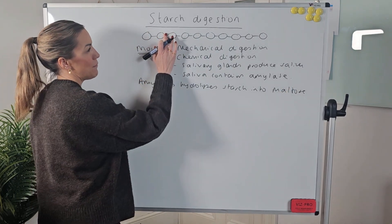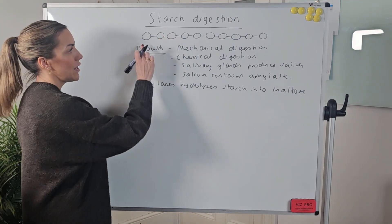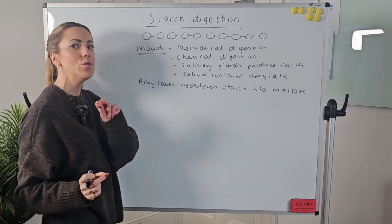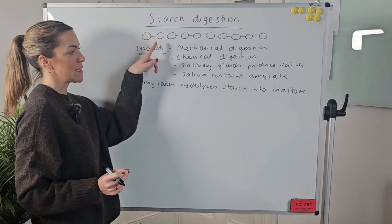Now amylase hydrolyzes or digests starch into maltose. So here, for example, if I show the hydrolysis of that glycosidic bond, now we've got maltose because we've got two alpha-glucose monomers joined together with a glycosidic bond. So this would be maltose.